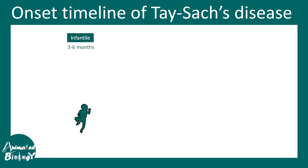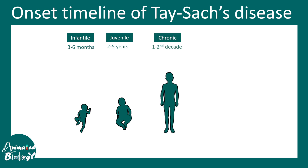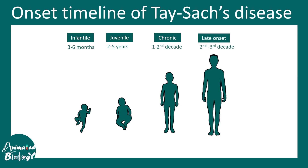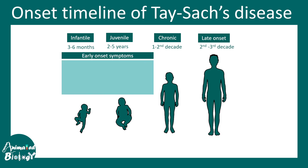There are different time points of onset of Tay-Sachs disease: infantile, within 3 to 6 months; juvenile, within 2 to 5 years; chronic, in the 1st to 2nd decade of life; and late onset, which generally happens in the 30s.